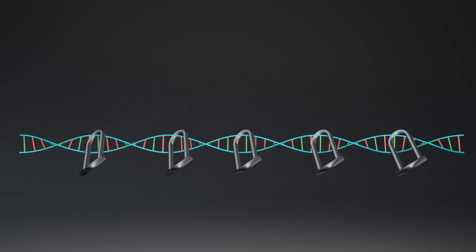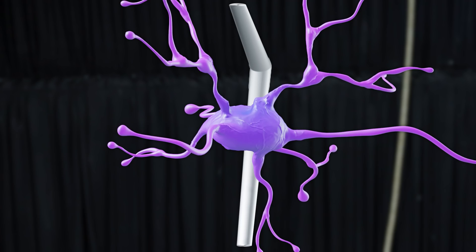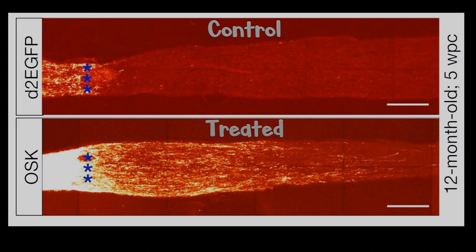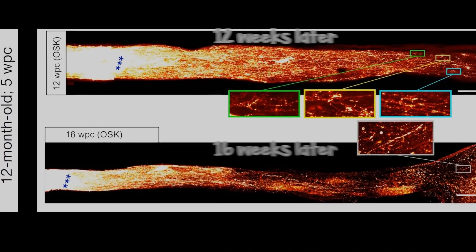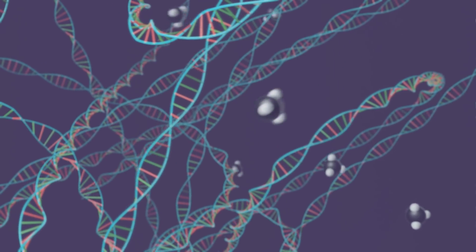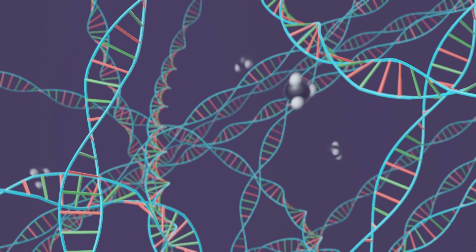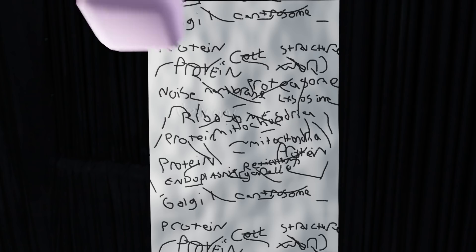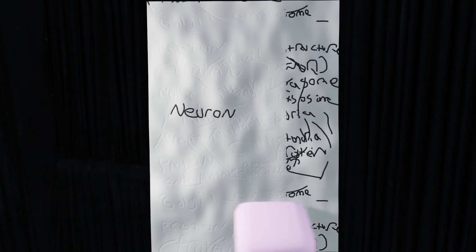However, after being crushed, copies of the OSK gene sequence were inserted into the cell's genome. Instead of simply dying as one would expect, the neuron with the OSK gene sequences started regenerating its axons. This is a big deal — central nervous system neurons did not do this. The presence of the OSK gene not only stopped the accumulation of DNA methylation, but also reverted the epigenome to a youthful state via a still-not-understood mechanism.